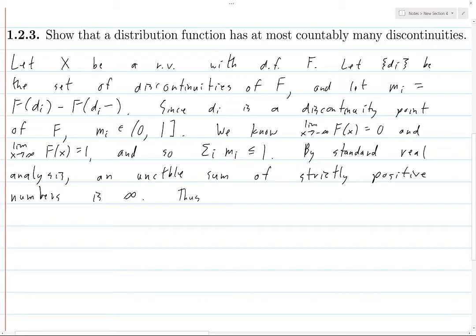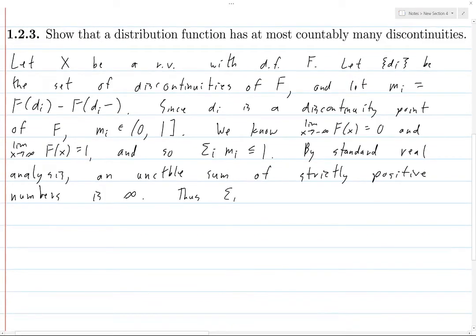So thus, the fact that the sum is less than or equal to one, this cannot be an uncountable sum. So the collection of the mi's is at most countable.